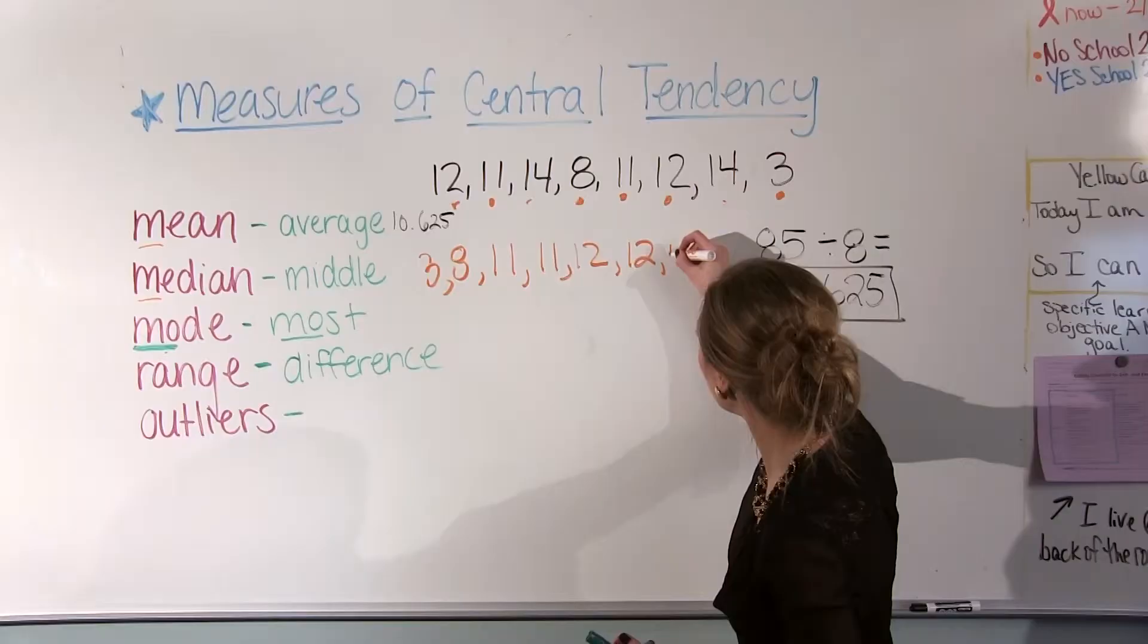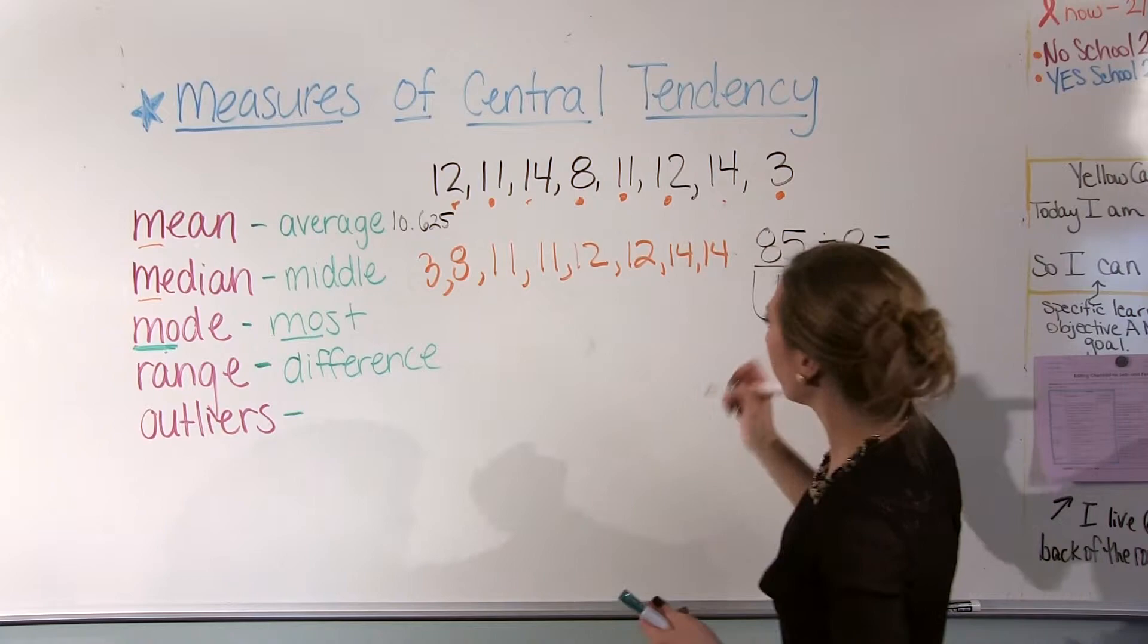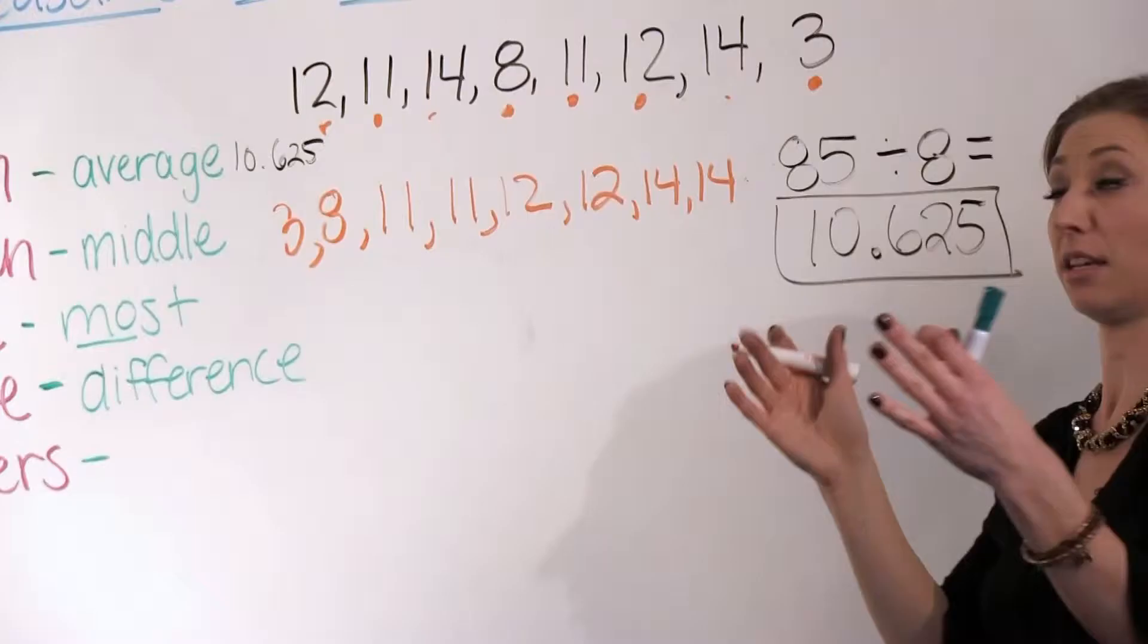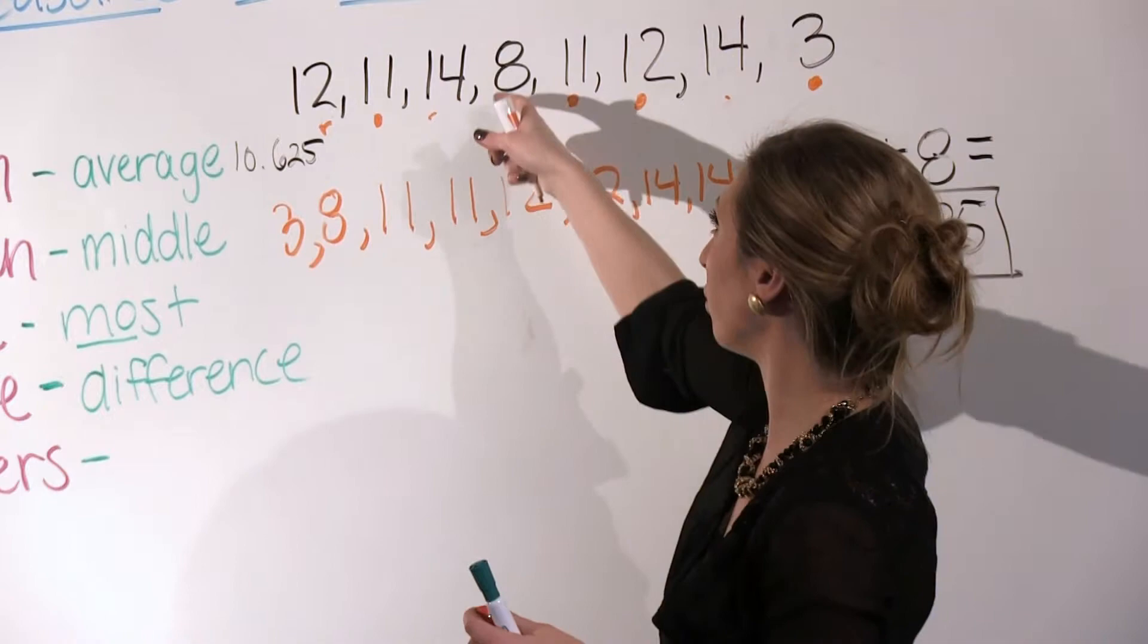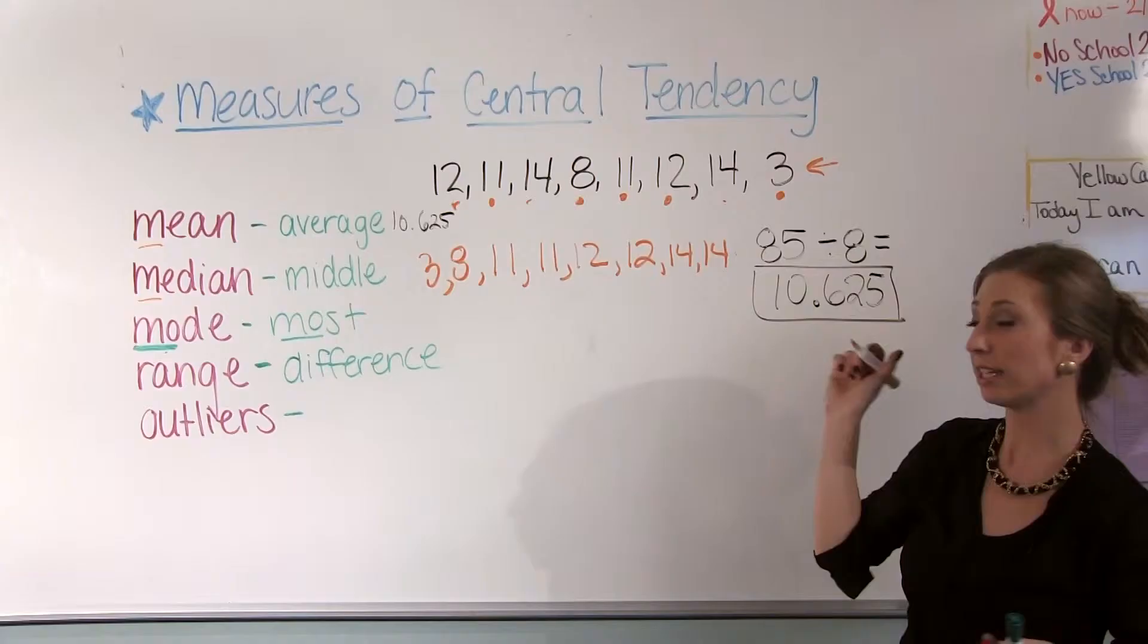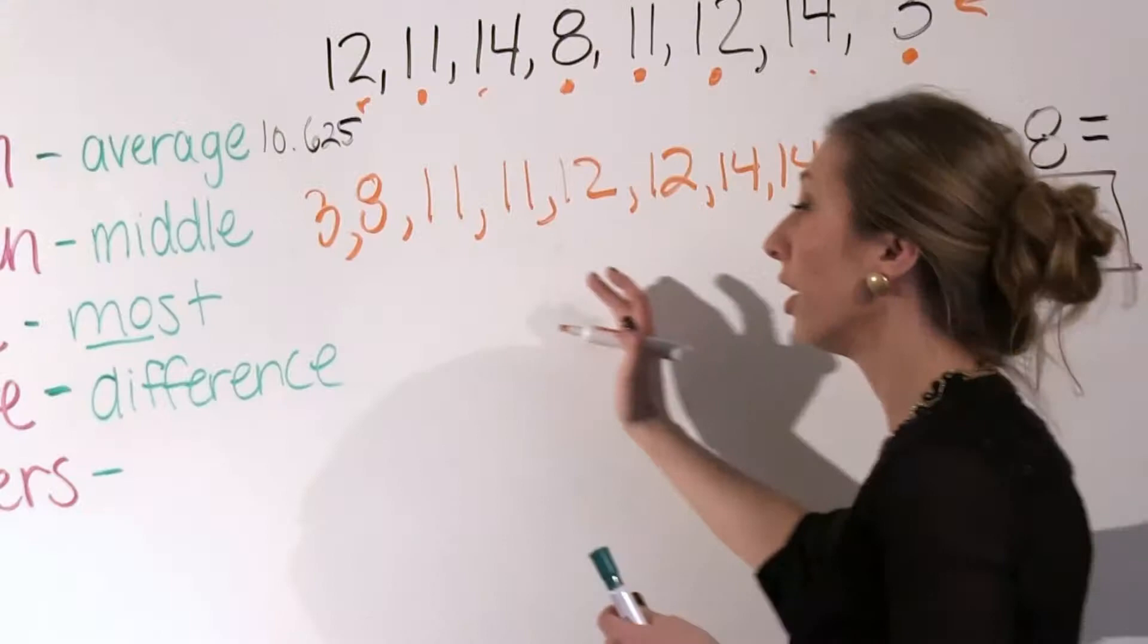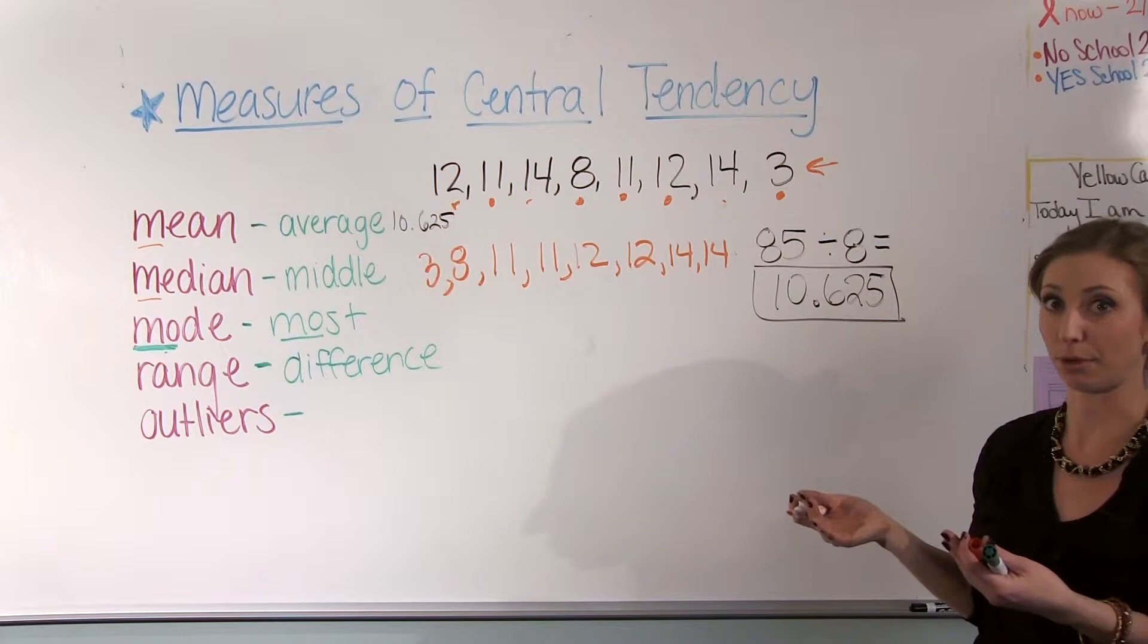And I have lastly 14 and 14. The other thing, and this is a big trick, this big hint, is count your numbers after you've done it to make sure that you have the same amount of numbers in your original list that you do in your list whenever you put it in order. The biggest mistakes I see whenever people are putting their numbers in order is they forget a number, and then that messes up the whole thing.